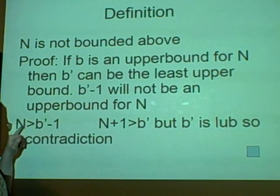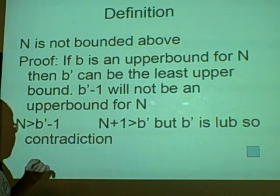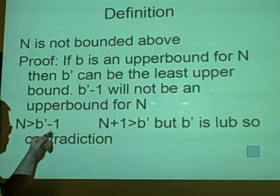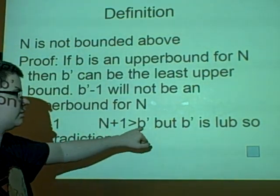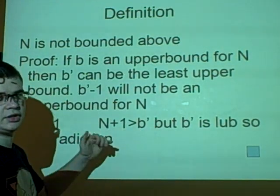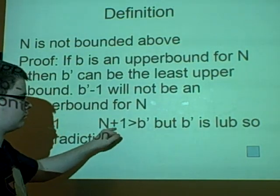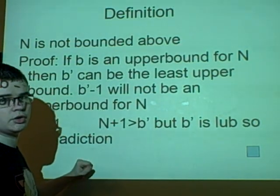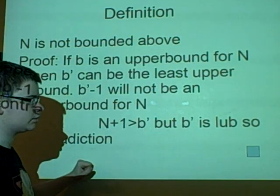So, we have n is bigger than b' minus 1, which we've said here. So we can move the 1 over and we get n, the natural number plus 1, is bigger than b'. Now we said b' is the least upper bound, so surely the n plus 1 should not be bigger.